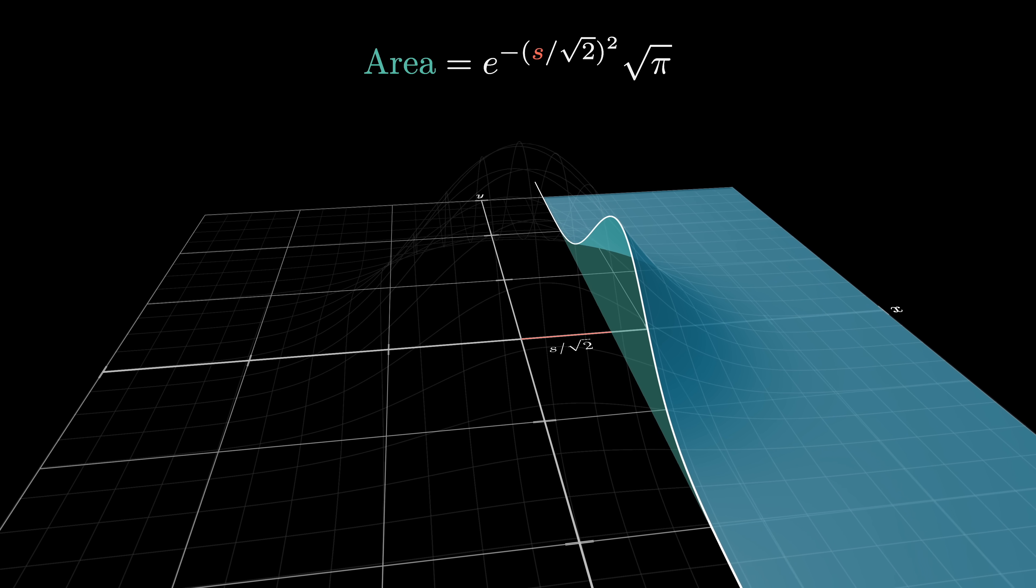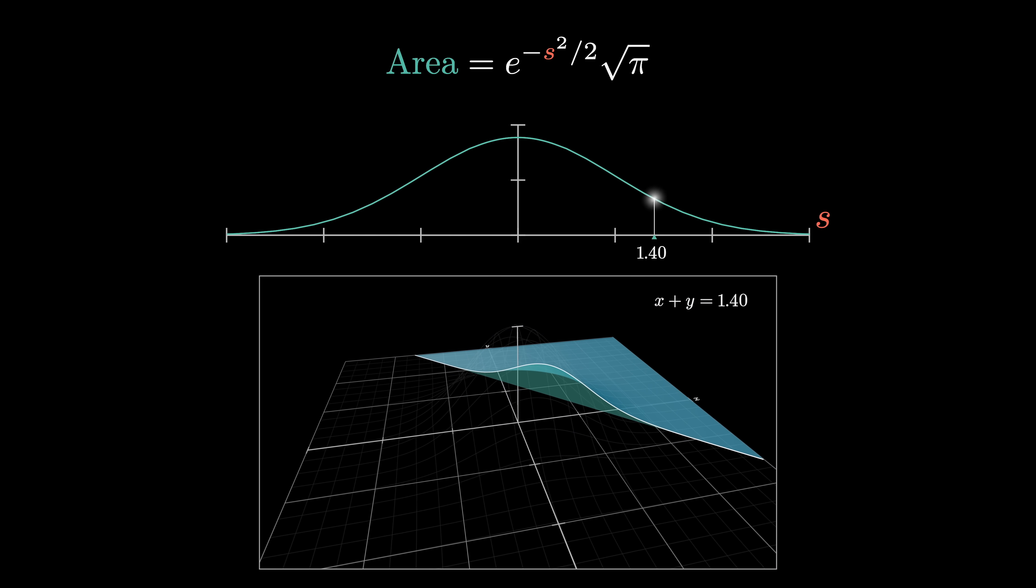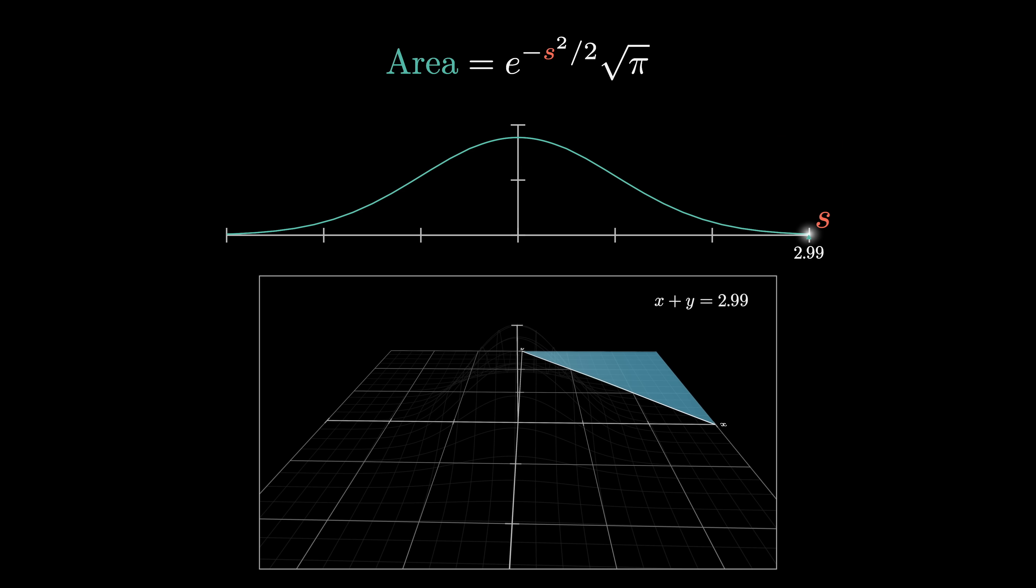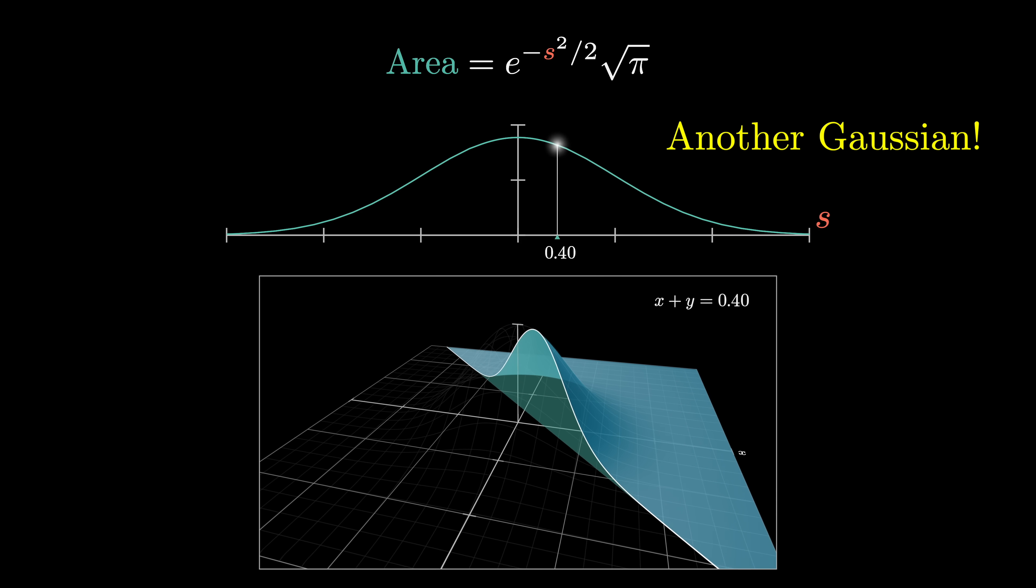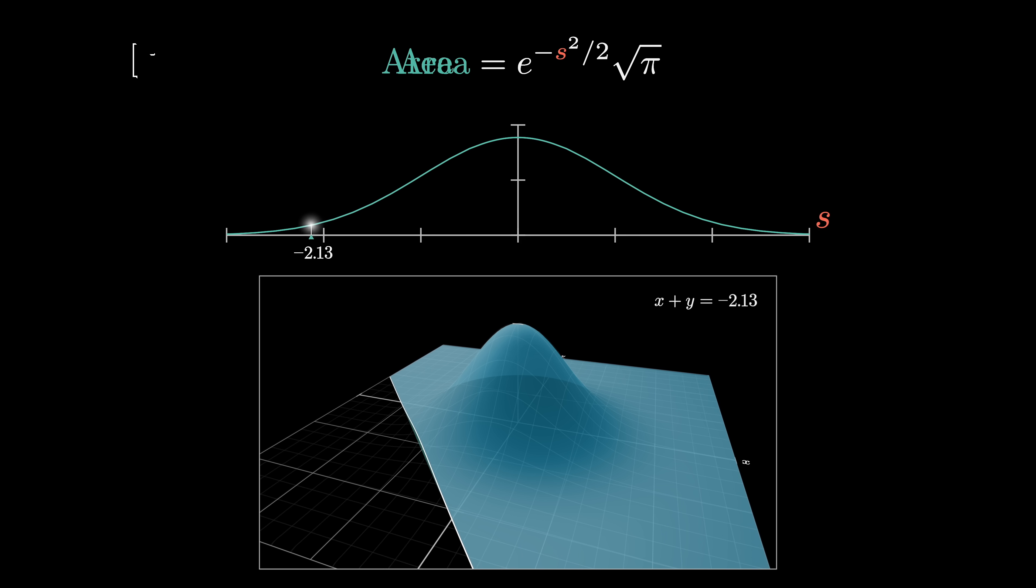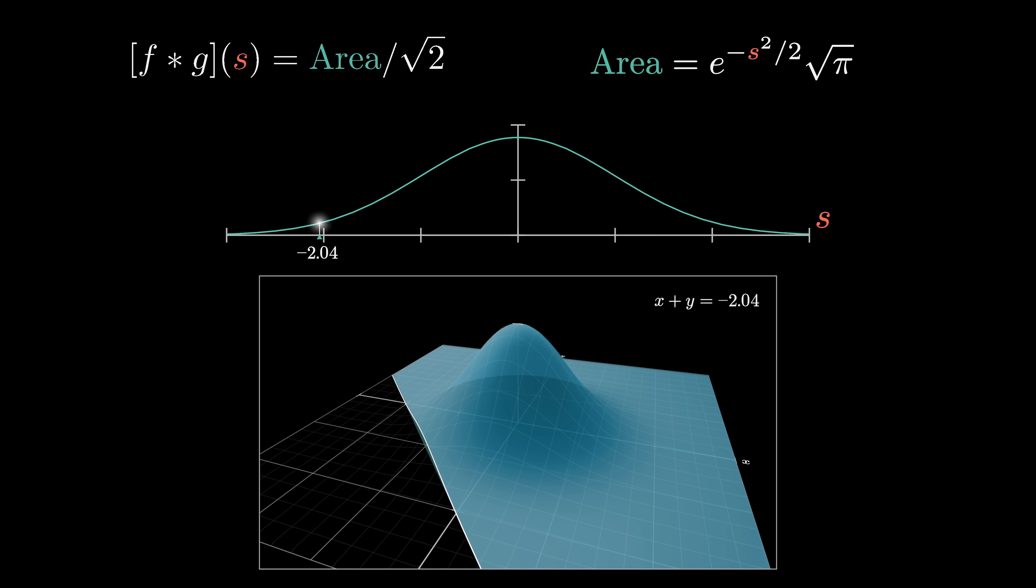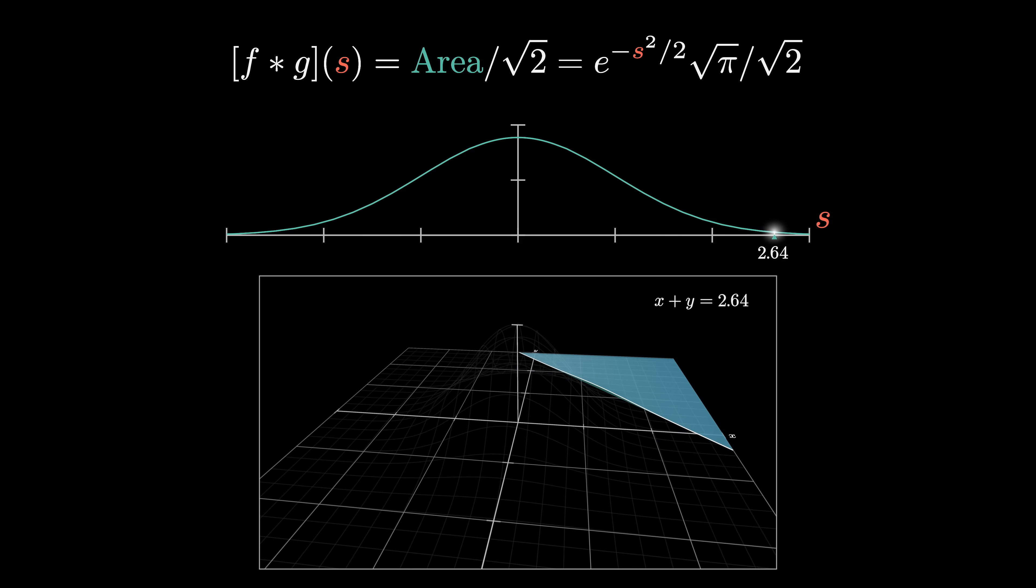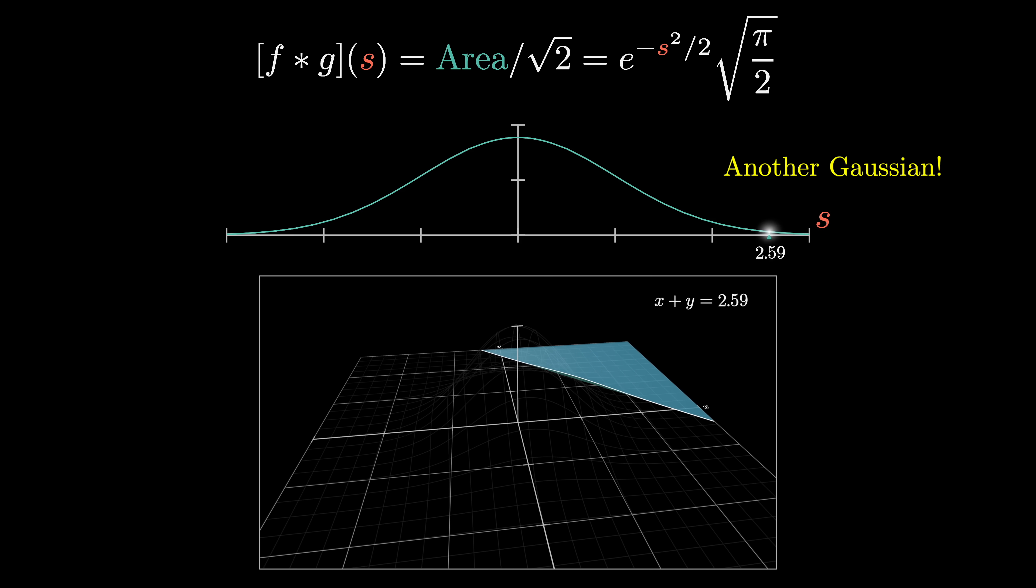And essentially this is our answer. We were looking for an expression for the area of these slices as a function of s, and now we have it. It looks like e to the negative s squared divided by 2, scaled by some constant. In other words, it's also a bell curve, another Gaussian, just stretched out a little bit because of this 2 in the exponent. As I said earlier, the convolution evaluated at s is not quite this area. Technically, it's this area divided by the square root of 2. We talked about it in the last video, but it doesn't really matter because it just gets baked into the constant. What really matters is the conclusion that a convolution between two Gaussians is itself another Gaussian.